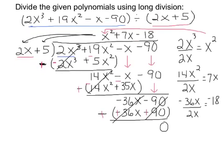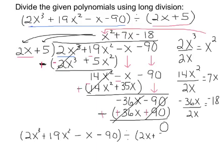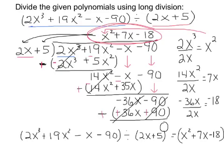So let's summarize the results of what we found. We found that our original problem, 2x to the third plus 19x squared minus x minus 90 divided by 2x plus 5 gave us a result. And what we're looking at now, the result is what we have up above the division, and that is x squared plus 7x minus 18. And that would be the quotient of this division problem.